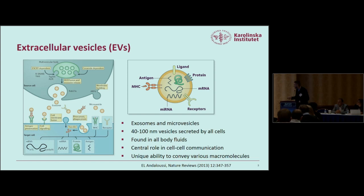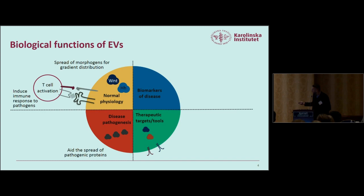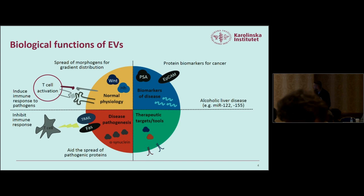What is really unique is their ability to convey macromolecules from distant places. In normal physiology they participate in immune responses towards pathogens and the spread of morphogens. They also have a role in pathology: cancer-derived EVs can induce T cell death to alter the immune system, and pathogenic proteins such as alpha-synuclein and A-beta have been proposed to be transported within the brain through these vesicles. The fact that they are involved in disease pathology also makes them interesting liquid biomarkers.